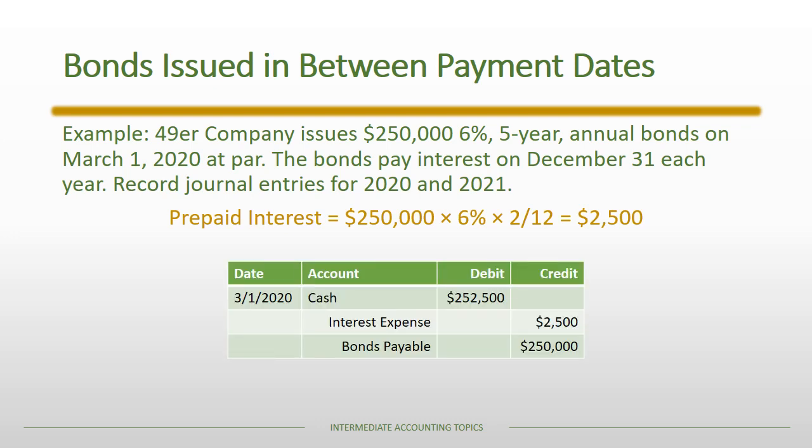That prepaid interest amount is $2,500. The journal entry has the face value or par value recorded as bonds payable, plus the $2,500 of accrued interest that gets prepaid, so the total amount received from the firm is going to be $252,500.